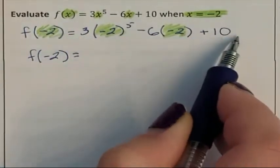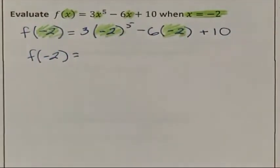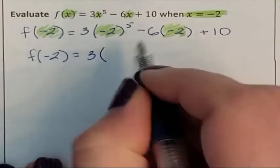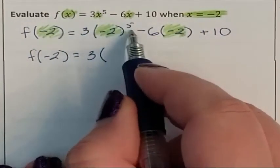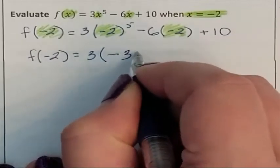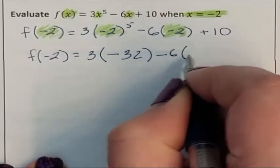Order of operations says the first thing I need to do is my exponents. So I have three times the entire quantity of negative 2, means it needed a parenthesis, raised to the fifth power is negative 32. That was the last exponent.